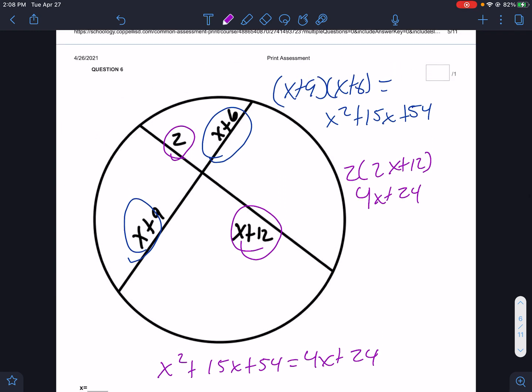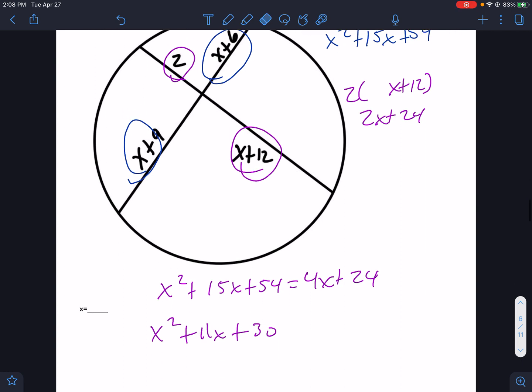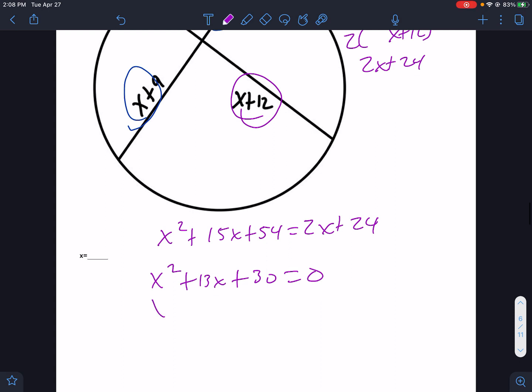9 plus 6 is 15. 12 times x plus 12 is 2x plus 24. So it's not 4x plus 24. It's 2x plus 24, which would make this 13 and that factors. That's going to be x plus 10 times x plus 3, which is negative 10 and negative 3.